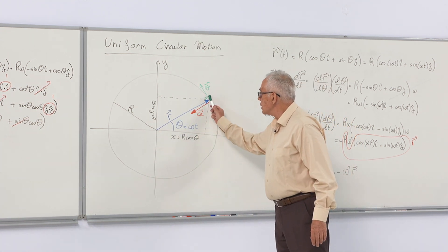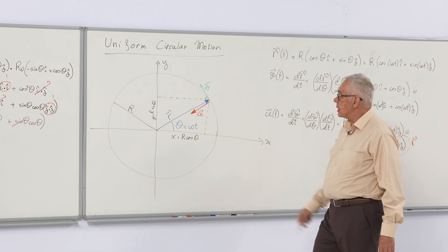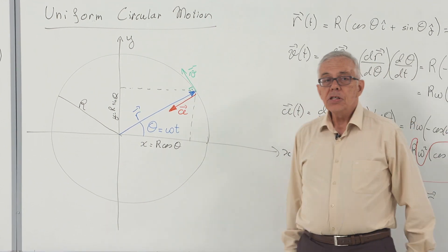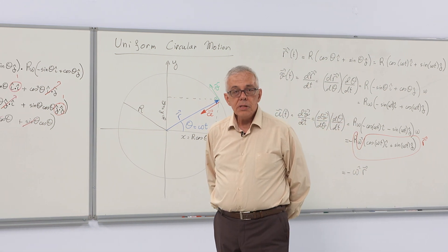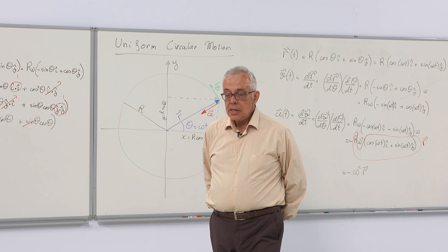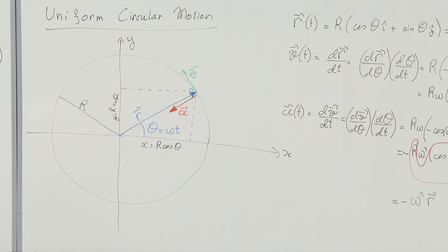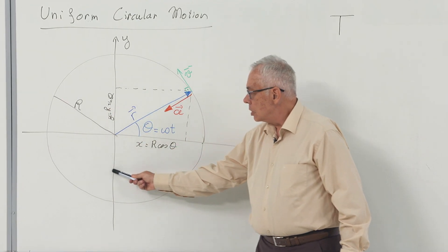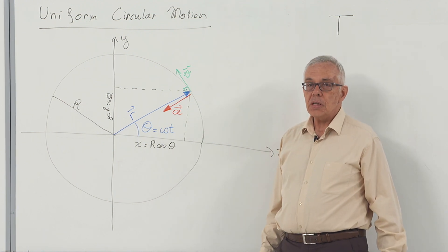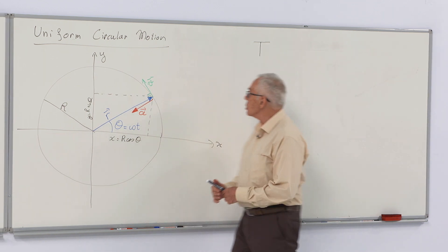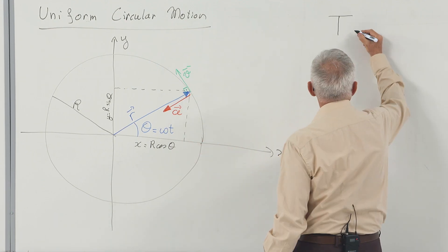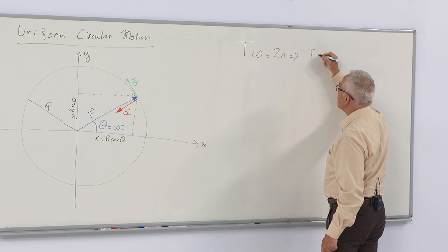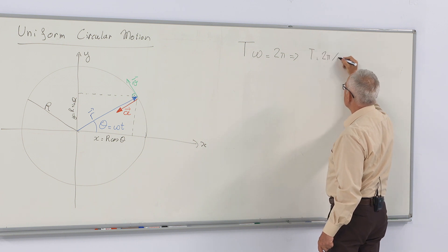Our next job is to look at the relation between the period of this motion, the acceleration, and velocity. The period T is the time needed for theta to complete one full circle, or two pi radians. So T times omega equals two pi, giving T equals two pi over omega.